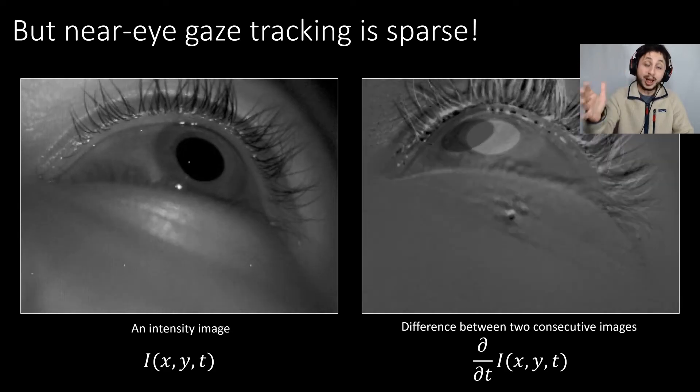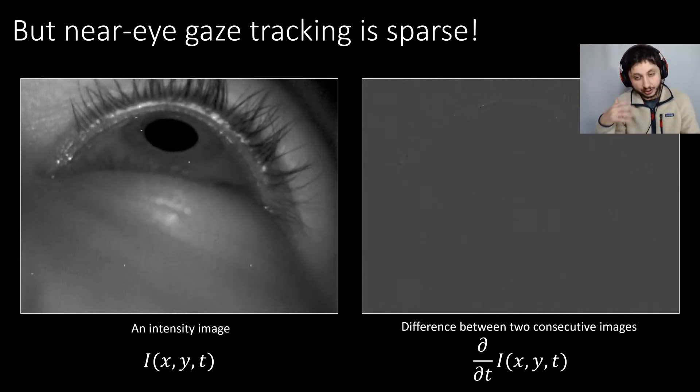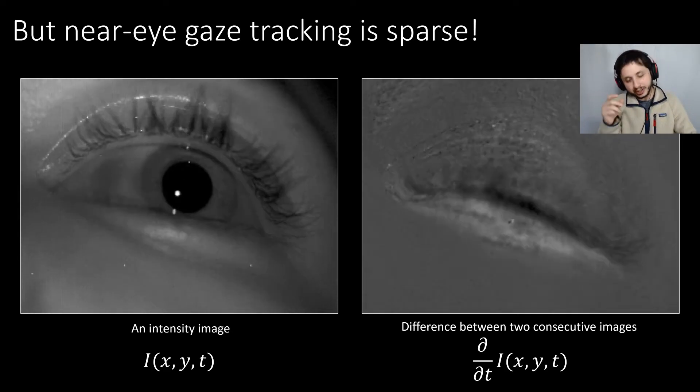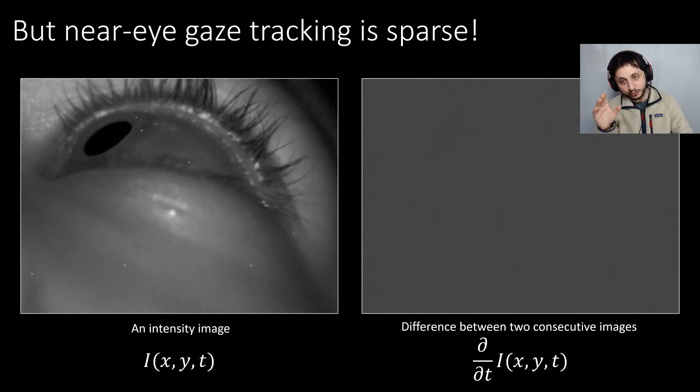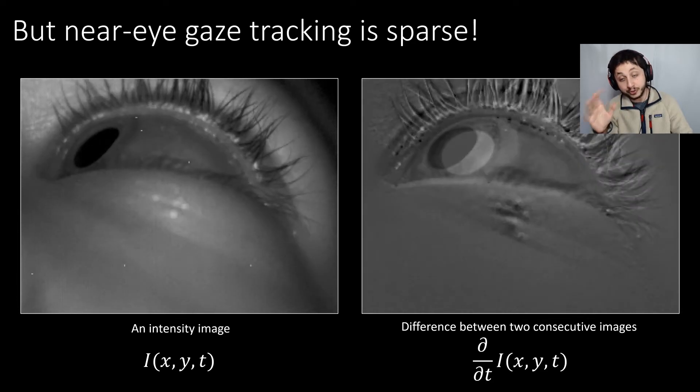But eye tracking lends itself well to this. Because eye tracking is, in some sense, a sparse problem. You only care about a few pixels that are moving. So most of the pixels on the eye are staying static. Right, so if you look at the difference images, the difference video really, on the right, you can see that only the pixels corresponding to the edge of the pupil are the ones that really matter.